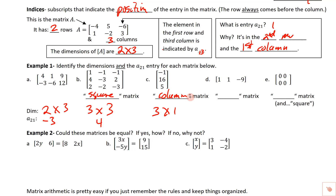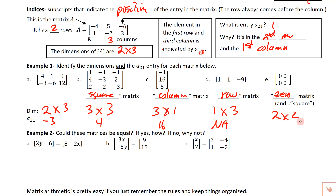For the column matrix, the a-two-one entry — second row, first column — is 16. The next one has one row and three columns, so it's called a row matrix. Can we find the a-two-one entry? It doesn't have a second row, so we write N/A. If a matrix is completely filled with zeros, we call it the zero matrix. For the two-by-two zero matrix, the a-two-one entry is just zero.